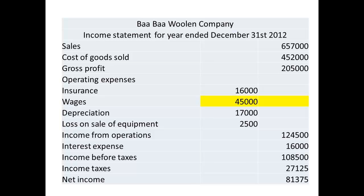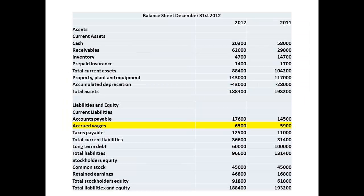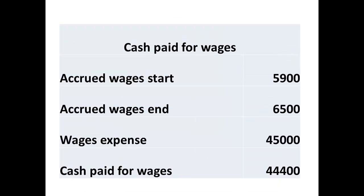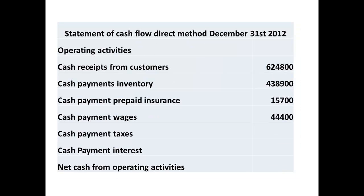To determine the cash paid for wages, we need the figure from the income statement and, from the balance sheets, the figures for accrued wages at the start and end of the year. We take the accrued wages at the start, add the wages expense, then subtract the accrued wages at the end of the year. This gives a figure of $44,400 as the cash payment for wages.